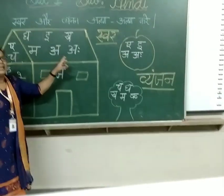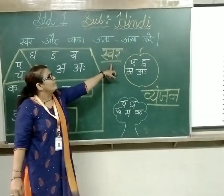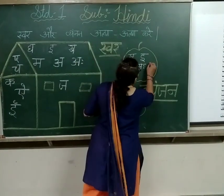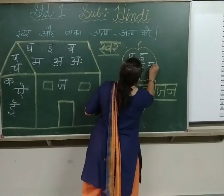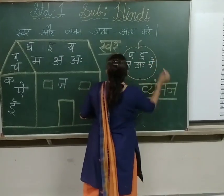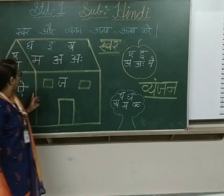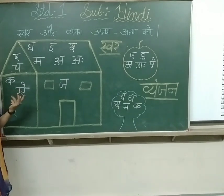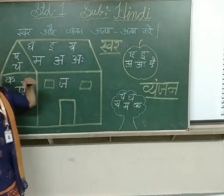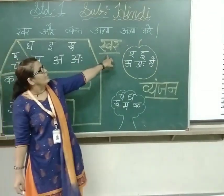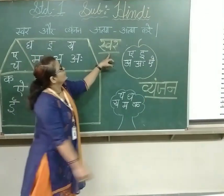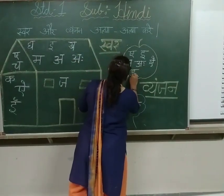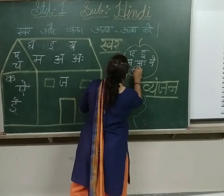आ — आ kis mein aata hai? Swar mein. Swar ko kahan likhenge? Save ke andar. आ से आना. Then ए से ए — ए से ए क्या होता है? Chalri se batao mujhe. Swar. Swar ko kahan likhte hain? Save ke andar. ए से ए.